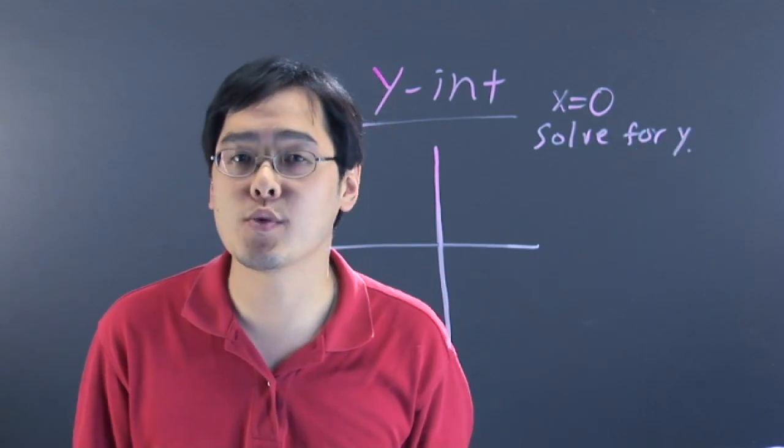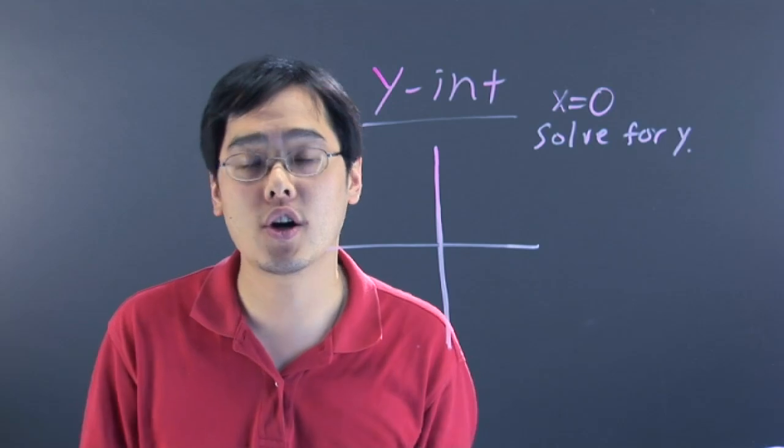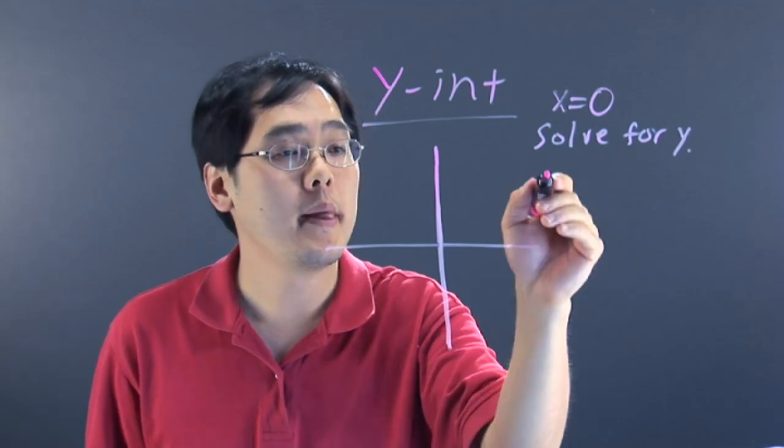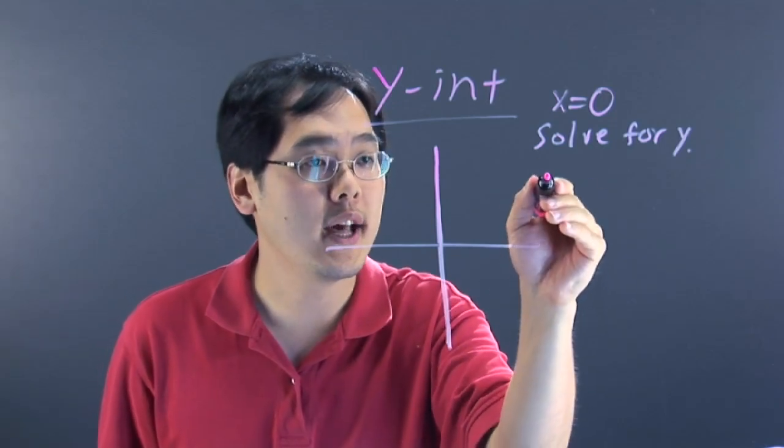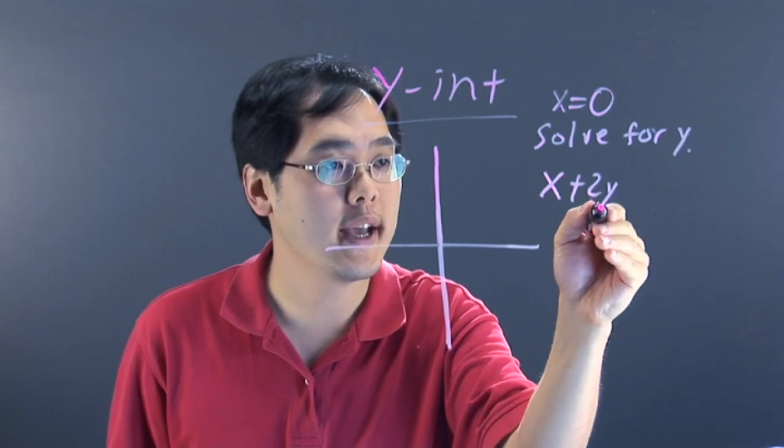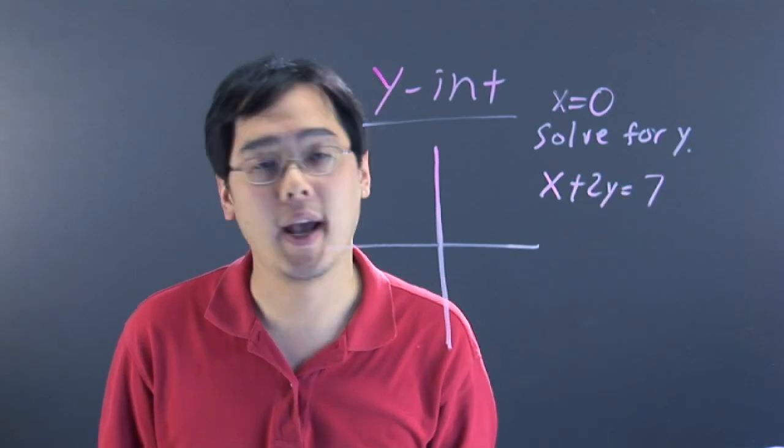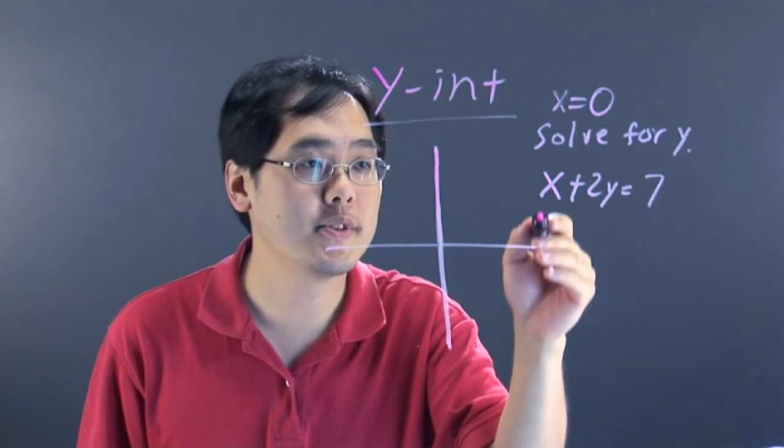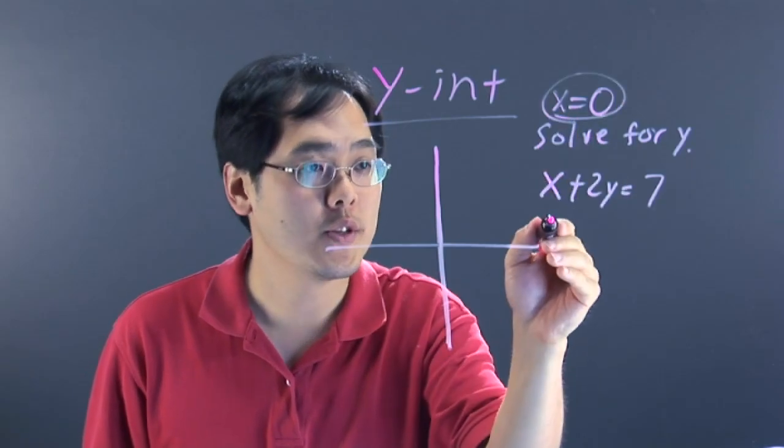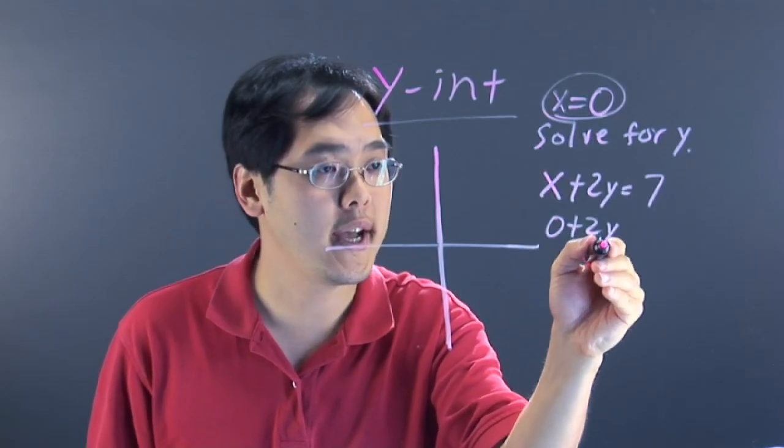No matter what the equation is, whether it be a line, whether it be a curve, etc. But basically, just a quick example, if you let, let's just say x plus 2y is equal to 7, and you want to find the y-intercept, you let x be zero.